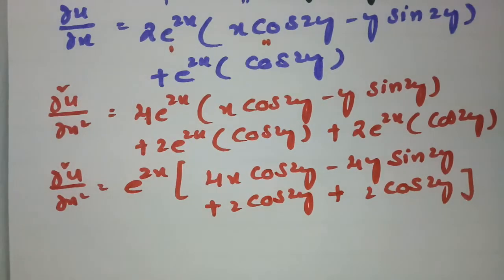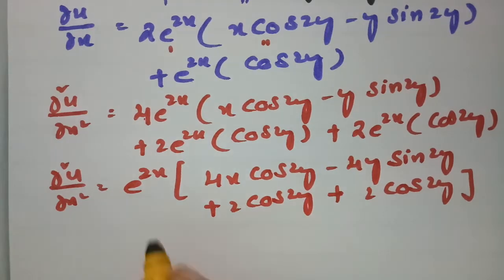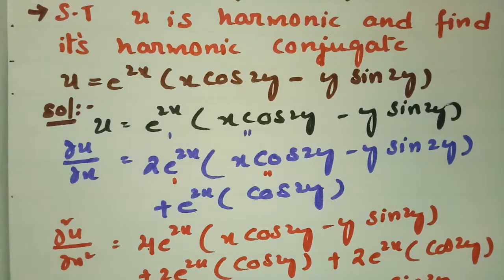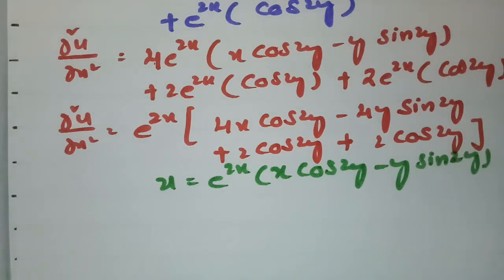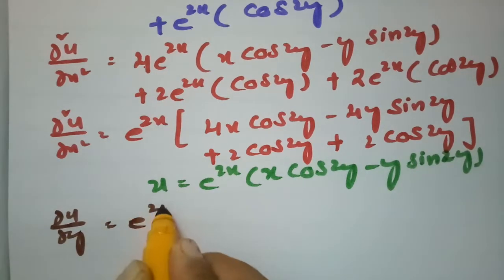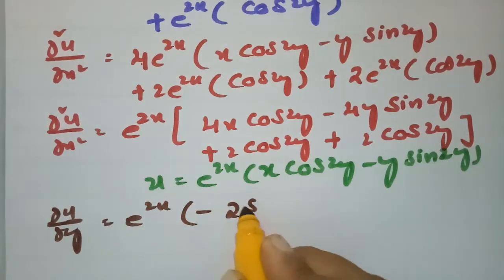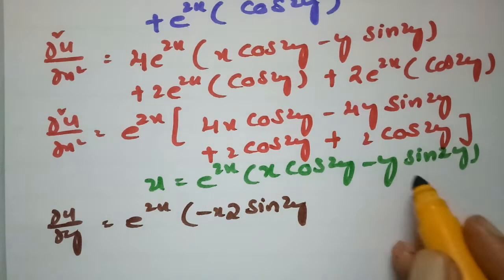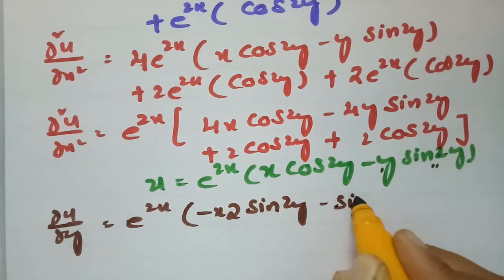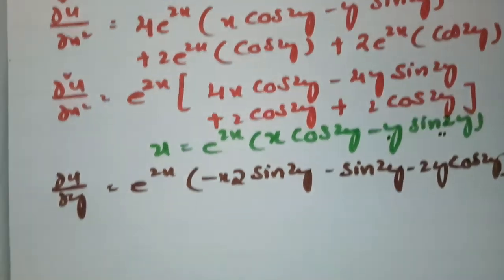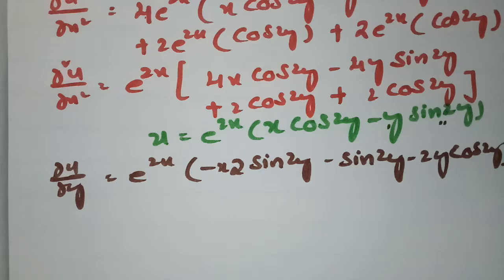Now we take the derivative with respect to y. From the question, u = e^(2x)(x·cos2y − y·sin2y). Differentiating with respect to y: ∂u/∂y = e^(2x) times [x·(−2sin2y) − (sin2y + y·2cos2y)], which gives e^(2x) times (−2x·sin2y − sin2y − 2y·cos2y).